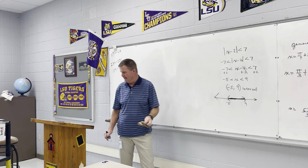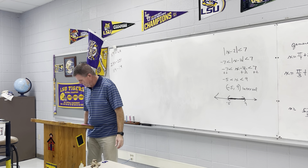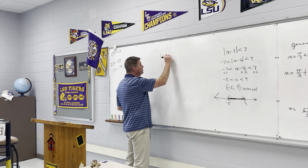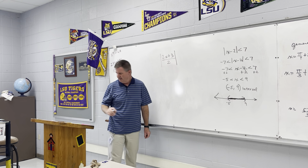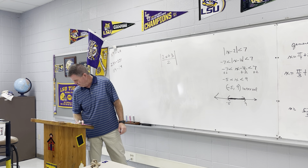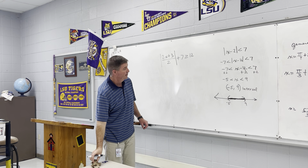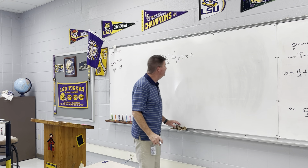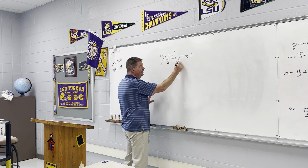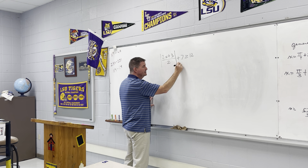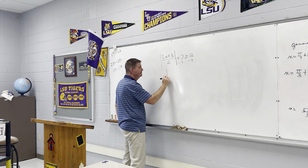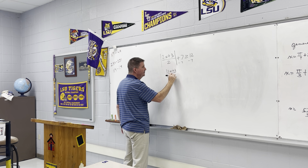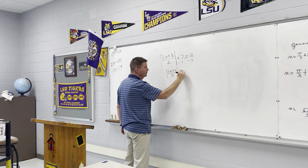Our last example is the absolute value of 2x plus 3 over 2, plus 7, is greater than or equal to 12. There's a lot going on, but we undo one thing at a time. First, isolate the absolute value by subtracting 7 from both sides. So the absolute value of 2x plus 3 over 2 is greater than or equal to 5.